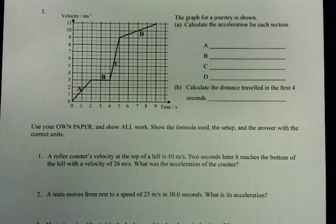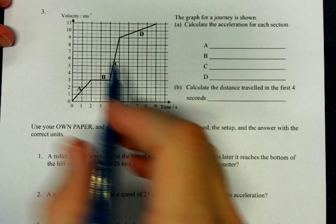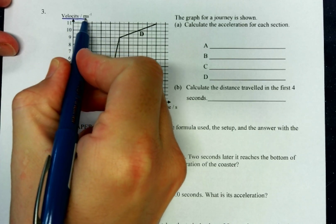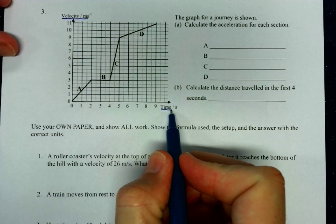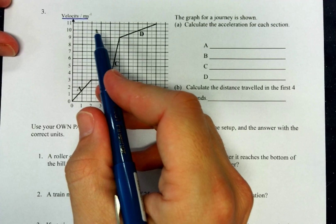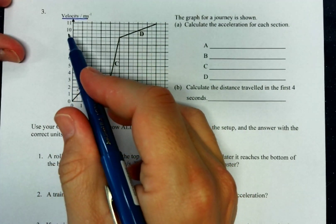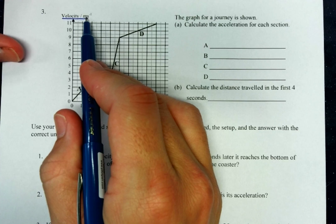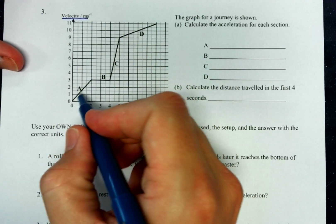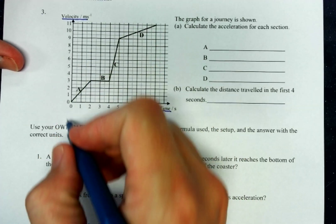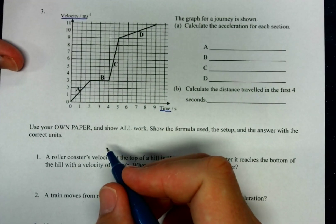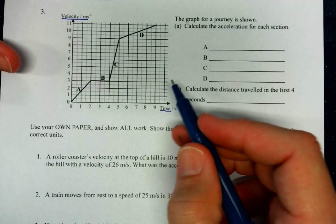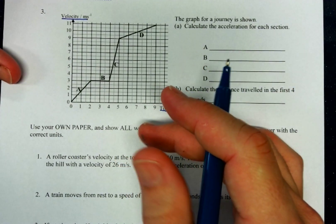Hi y'all. I want to go through a couple of examples with graphs. Now this is a little different than the graphs we did before because this is velocity versus time graphs. So remember when you're looking at the y-axis here, this is not position, it's velocity.